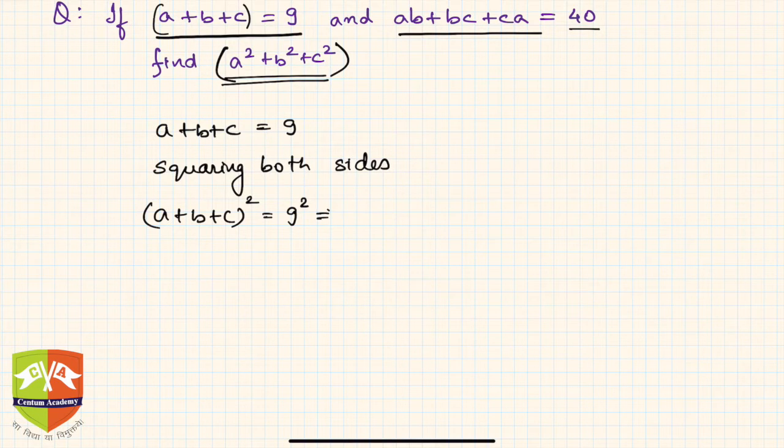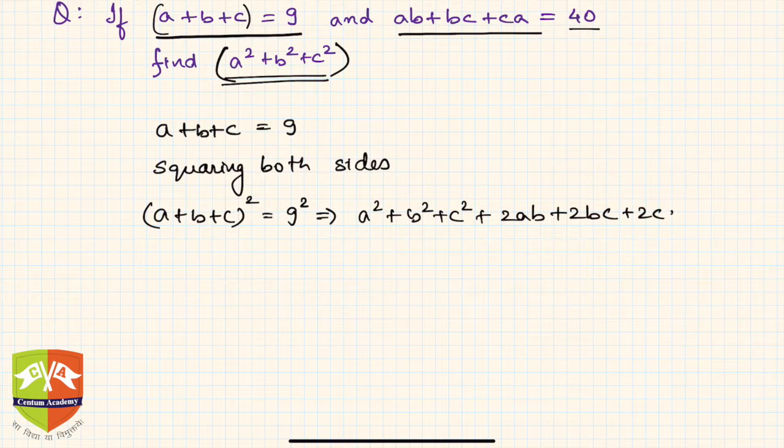This implies if I expand the identity, I will get a square plus b square plus c square plus 2ab plus 2bc plus 2ca is equal to 81. 9 square is 81.